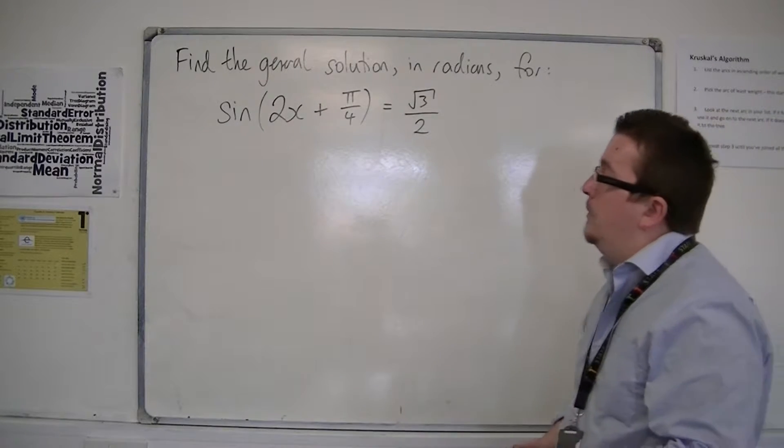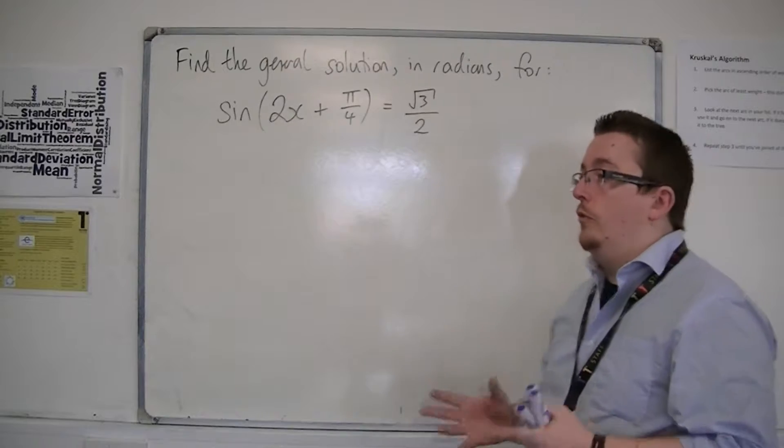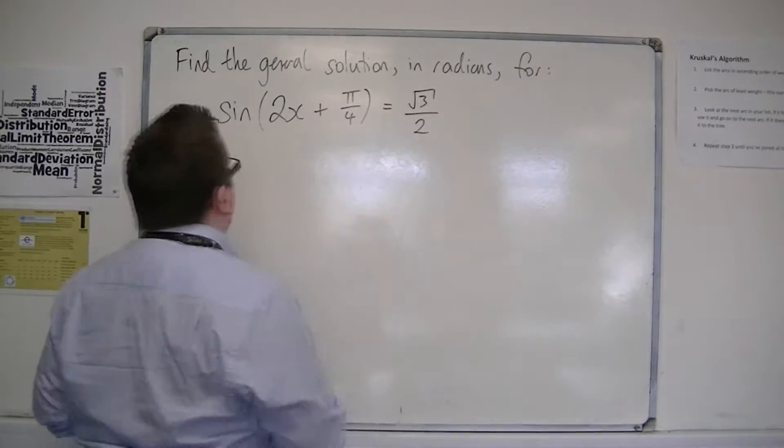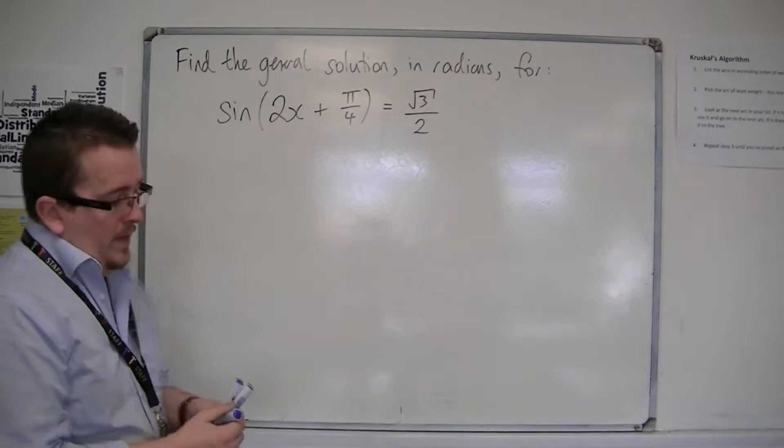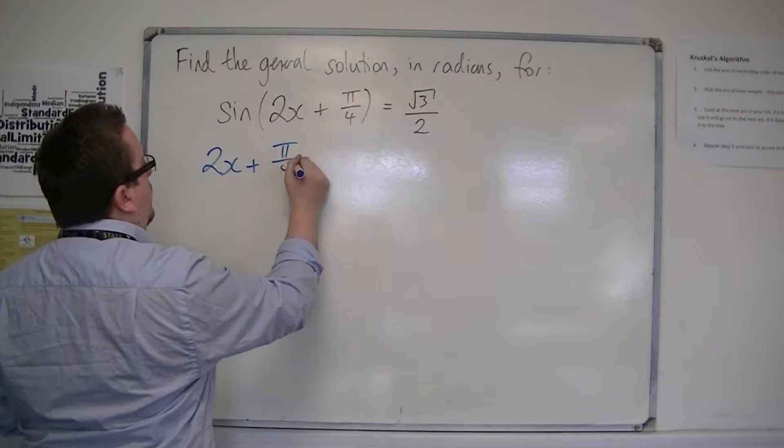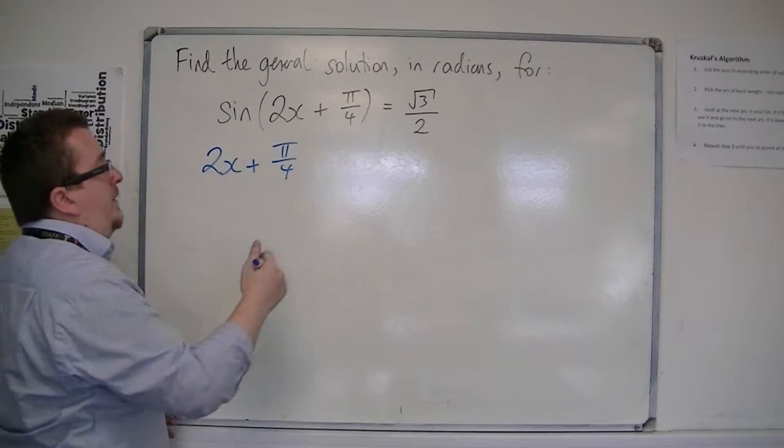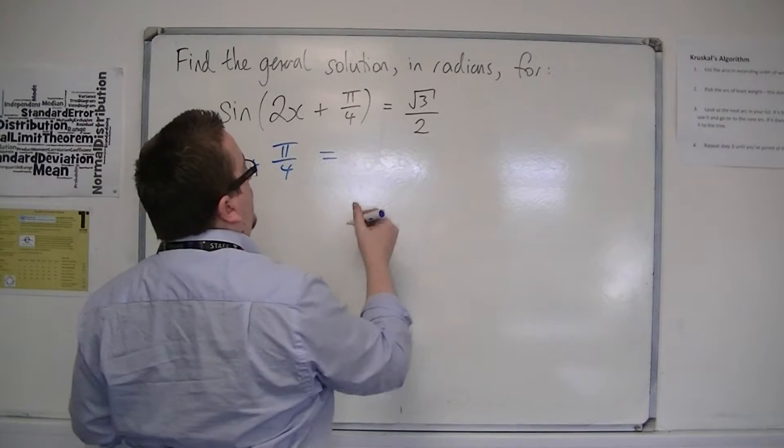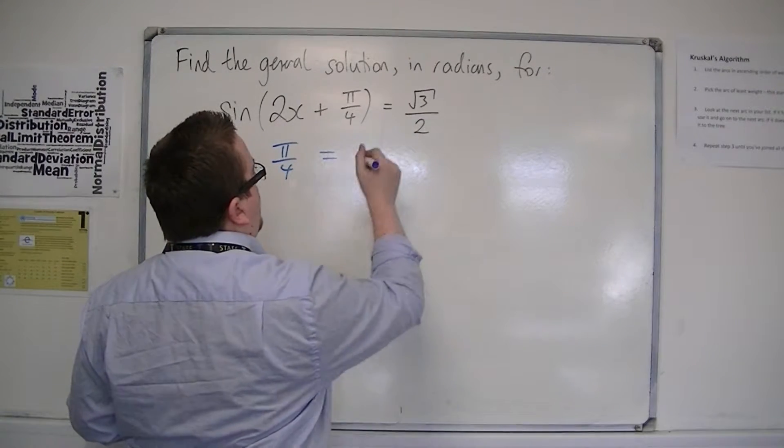Sine of 2x plus π/4 equals √3/2. Find the general solution. The first thing to do is to inverse sine both sides. What is inside the bracket will stay the same, and then we need to find the inverse sine of √3/2.